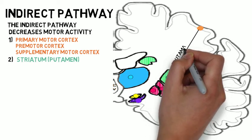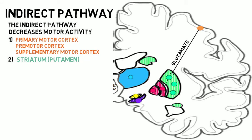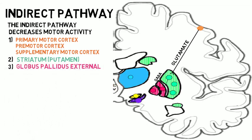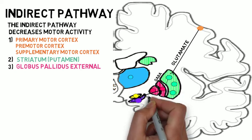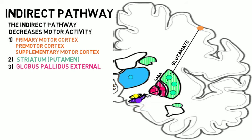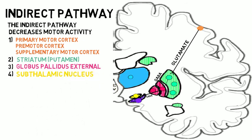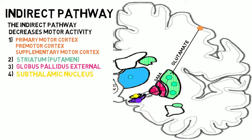The cortical projections to the striatum use the neurotransmitter glutamate, which excites the medium spiny neurons. In turn, the neurons in the striatum secrete the inhibitory neurotransmitter GABA from their axon terminals into the globus pallidus external. The neurons in the globus pallidus external are normally tonically active GABAergic neurons that project to the subthalamic nucleus. Increased inhibitory activity of the globus pallidus external results in less inhibition, or disinhibition, of the subthalamic nucleus.